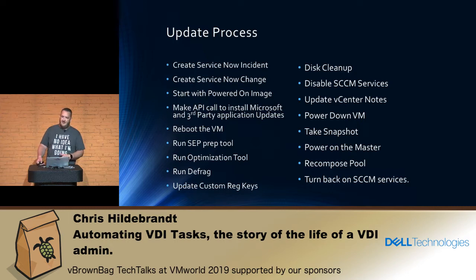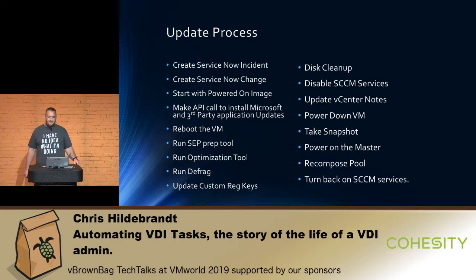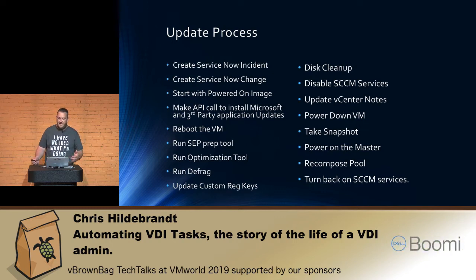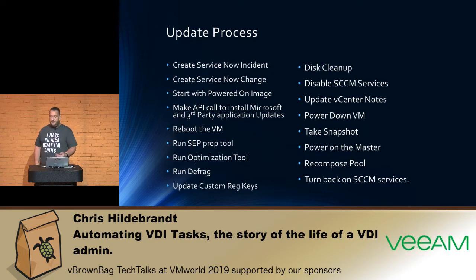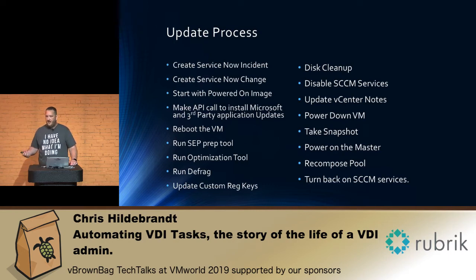There is a very good reason to disable SCCM services: for link clones, it will create a computer object every time a new VM is created, so you can fill up the SCCM database. Made that mistake once — fair warning. Then we update vCenter notes, power down the VM, take a snapshot, power the master back on because I want it to update faster the next time, recompose the pool, and then turn SCCM services back on along with the necessary services for updating things on the backend. That way, when updates come available, it auto-installs.